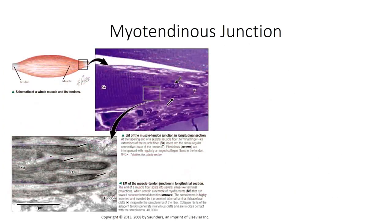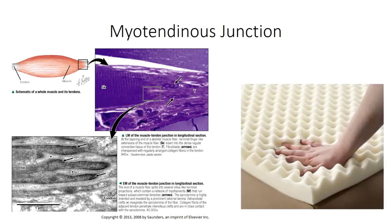The myotendinous junction is the point of transition between muscle and tendon. In this region, the cylindrical muscle fibers taper to serrated points, and the three layers of connective tissue within the muscle — the epimysium, perimysium, and endomysium — converge to blend with the collagen fibrils of the tendon. The arrangement looks something like a foam mattress topper, similar to the papilla seen in the dermis of the skin. The numerous peaks and troughs at the tissue interface increase the overall surface area to strengthen the contact between the two tissues.